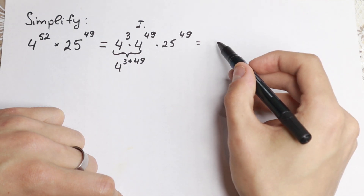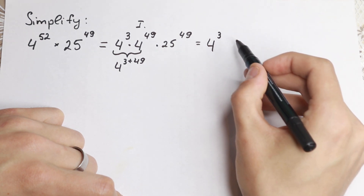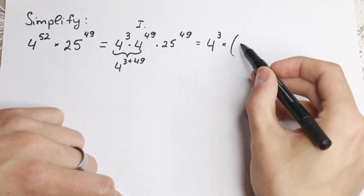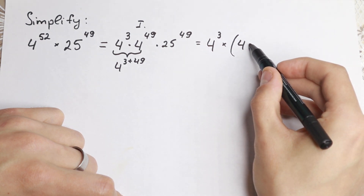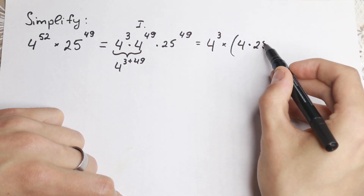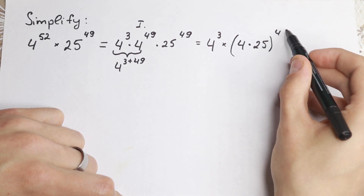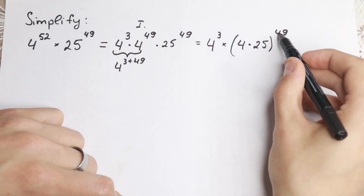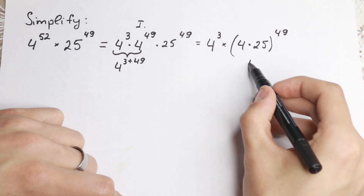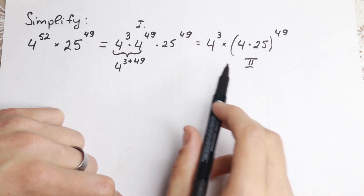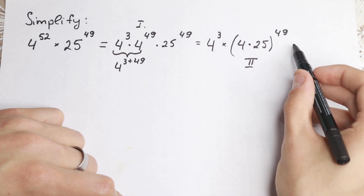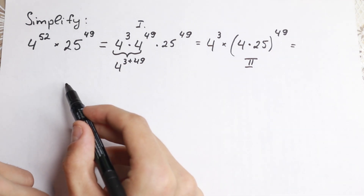So I write 4 cubed first, and then I group the remaining terms in parentheses. We have 4 times 25 to the power of 49. This is the second really good property — the first one was splitting the exponent, and this is the second one, grouping different bases with the same power.